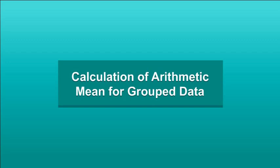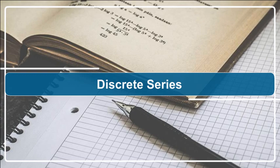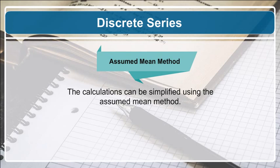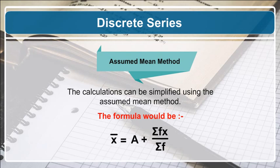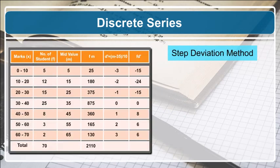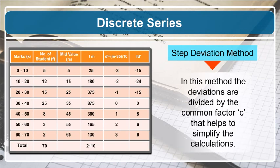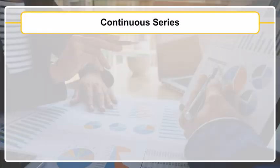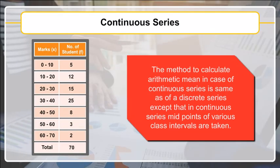For discrete series, the assumed mean method formula is: x-bar = a + summation(fd) / summation(f). In the step deviation method, deviations are divided by the common factor c to simplify calculations. The formula is: x-bar = a + (summation(fd-dash) / summation(f)) × c.